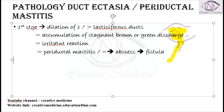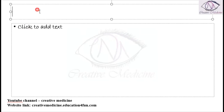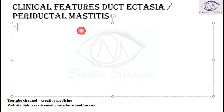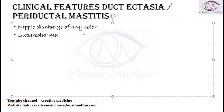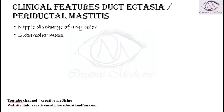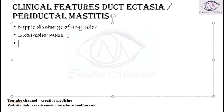Clinical features of duct ectasia or periductal mastitis: The patient will present with nipple discharge of any color, typically brown or greenish. There is also a subareolar mass, because the dilated duct is seen as a mass below the nipple.